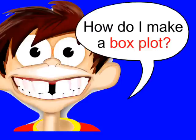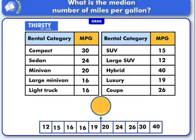So how do I make one? Well here we have some gas mileage for 10 different cars. The first thing you want to do when you're making a box plot is take all your data and place it in order from least to greatest, which we've done down here.